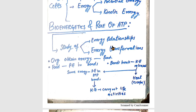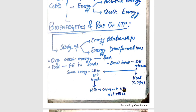In food, the chemical bonds store potential energy. When those bonds are broken, the potential energy is converted into kinetic energy and released. This kinetic energy is split into two parts: one part is stored in ATP bonds as potential energy, and the other part escapes as heat. The energy stored in ATP bonds can later be converted into kinetic energy to carry out life activities.